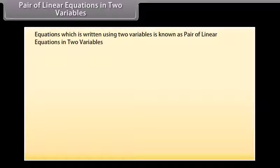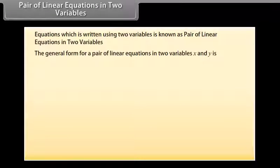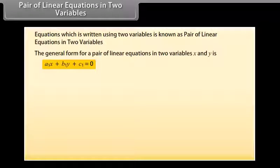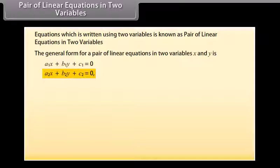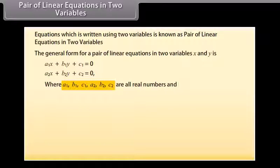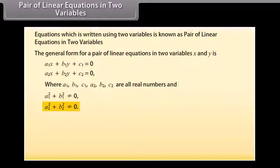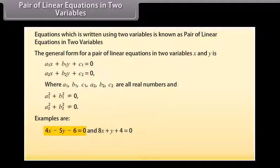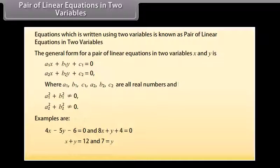Pair of linear equations in two variables. Equations written using two variables are known as a pair of linear equations in two variables. The general form is: a1x + b1y + c1 = 0 and a2x + b2y + c2 = 0, where a1, b1, c1, a2, b2, c2 are all real numbers and a1² + b1² ≠ 0. Examples are: 4x − 5y − 6 = 0 and 8x + y + 4 = 0; and x + y = 12 and 7 = y.